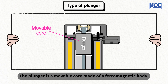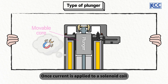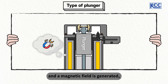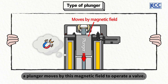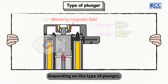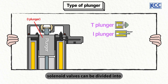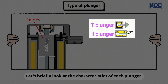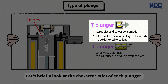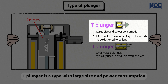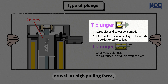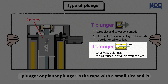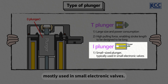The plunger is a movable core made of a ferrous magnetic body. Once current is applied to a solenoid coil and a magnetic field is generated, a plunger moves by this magnetic field to operate a valve. Depending on the type of plunger, solenoid valves can be divided into the T plunger type and I plunger type. The T plunger is a type with large size and power consumption as well as high pulling force, so it is able to make the stroke length longer. The I plunger, or planar plunger, is the type with a small size and is mostly used in small electronic valves.